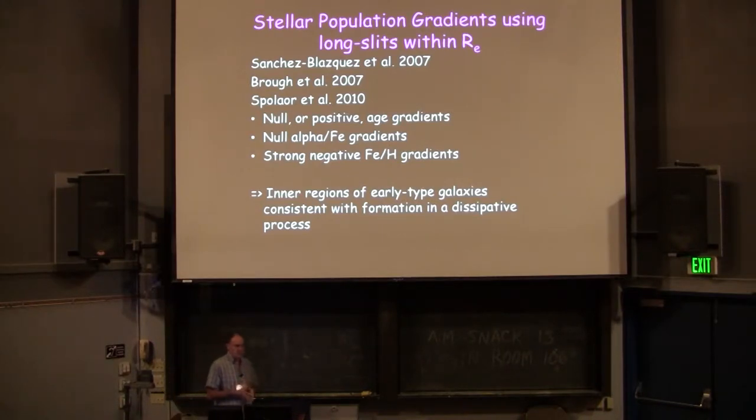What you do see is very strong metallicity gradients, very strong negative declining metallicity gradients, much more metal rich in the centers of galaxies. And these inner regions by these stellar population properties seem to be a bit more consistent with formation in some sort of dissipated process that is responsible for that very strong metallicity gradient.